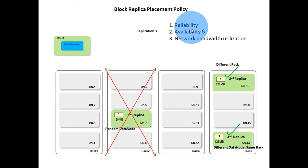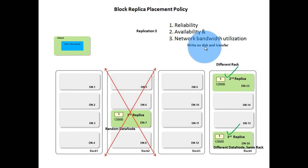This means data is stored reliably on HDFS and is always available. However, writing data involves network bandwidth utilization, because it is not just writing data on disk but also transferring data to different data nodes. This adds network delay to the write operation, making write operations an expensive operation.